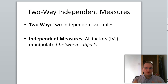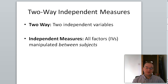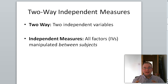Let's break down the term two-way independent measures ANOVA. The two-way just means that there are two independent variables — two things that the experimenter has manipulated or is controlling within the study. The independent measures just means that all of the manipulations are occurring between subjects. Every subject will be assigned to one condition, and no participant will take part in more than one condition. This is the complete opposite to a repeated measures ANOVA, where a subject takes part in every single condition.